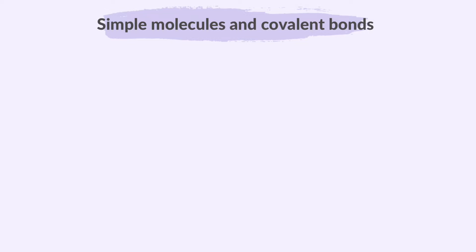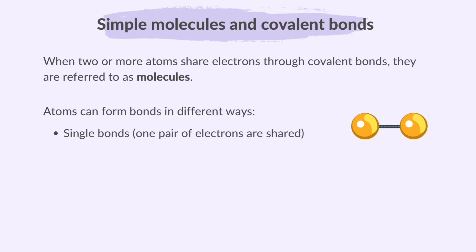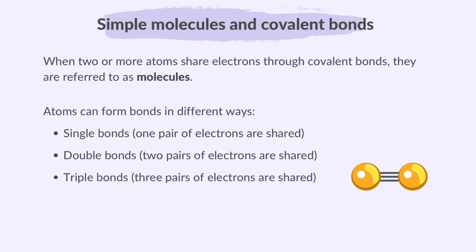Let's first learn the formation of covalent bonds in simple molecules. When two or more atoms share electrons through covalent bonds, they are referred to as molecules. Keep in mind that atoms can form bonds in different ways. Single bonds involve the sharing of a single pair of electrons. Double bonds, two pairs of electrons are shared. And triple bonds involve the sharing of three pairs of electrons.